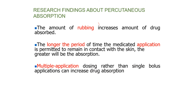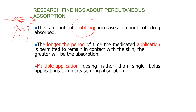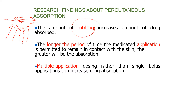Rubbing or massaging the skin will increase drug permeation. This massage increases blood flow to the site of administration. Increasing blood flow will increase absorption — more blood will take the drug from the skin surface and carry it away. So increasing blood flow to the site of administration increases permeation. Also, the longer the period of application, the more the absorption — absorption cannot happen within one or two minutes; it needs time.